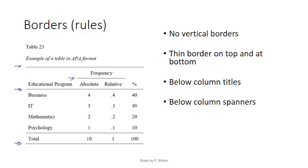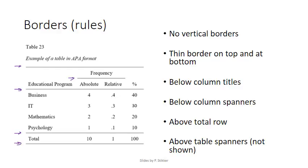A column spanner spans over two columns. You can also add a horizontal border above the total row. The last place where you can add one is above a so-called table spanner, which is sometimes used if you have two tables within one larger one — above it you can indicate that it's the next part of the table.